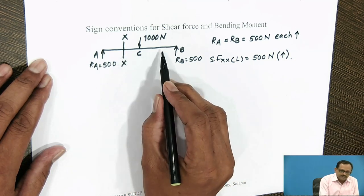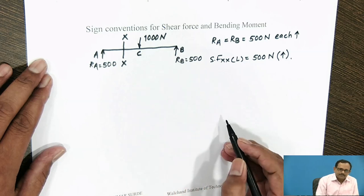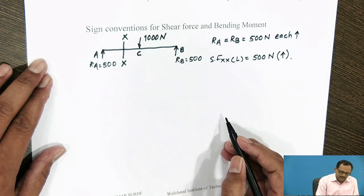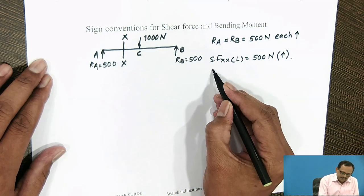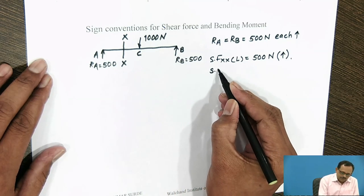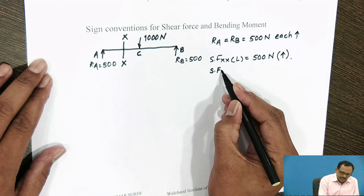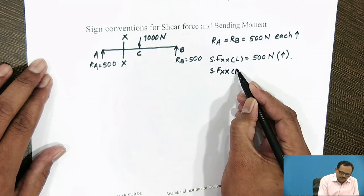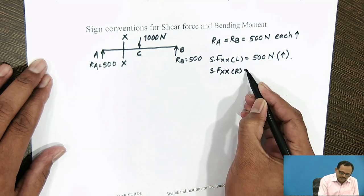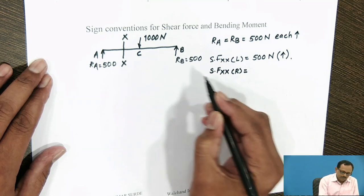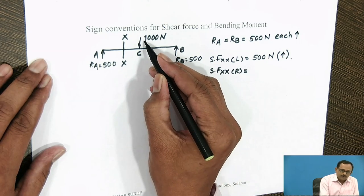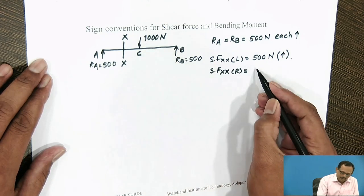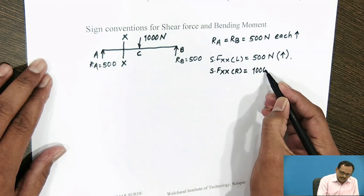When you consider the right side of section XX, the Shear Force at section XX to its right side is equal to 1000 N acting in the downward direction.